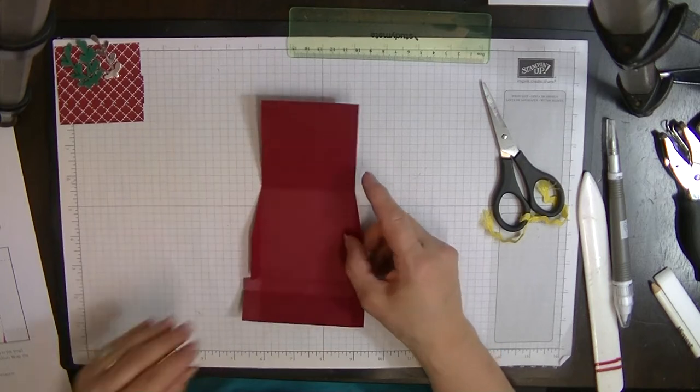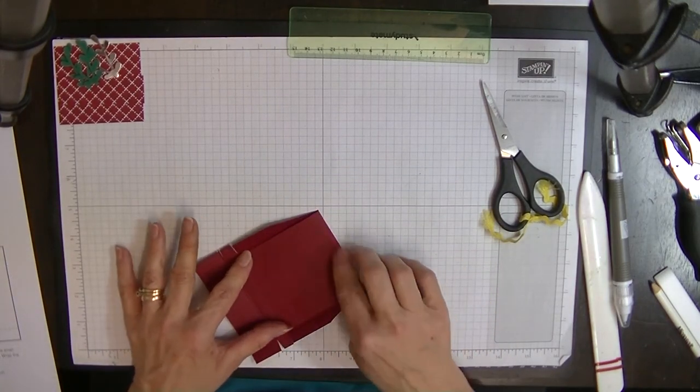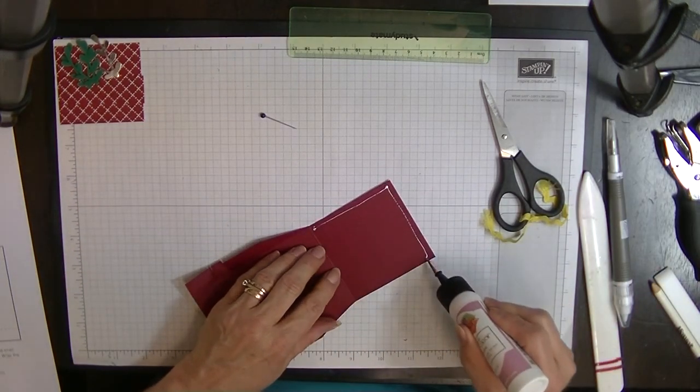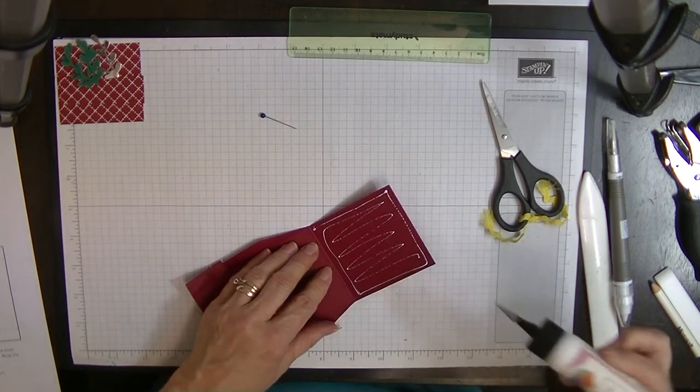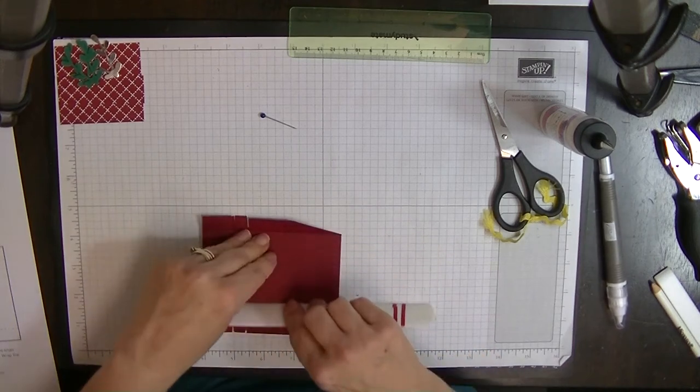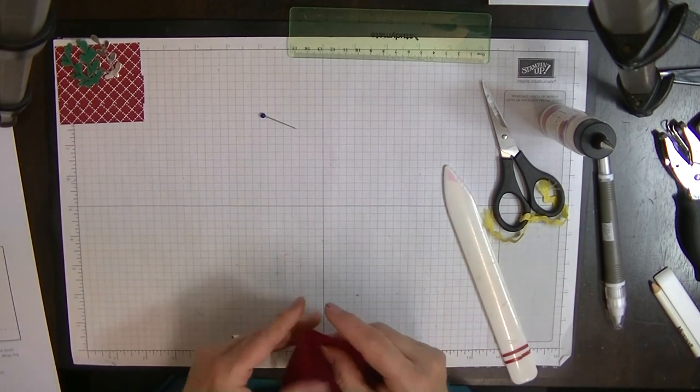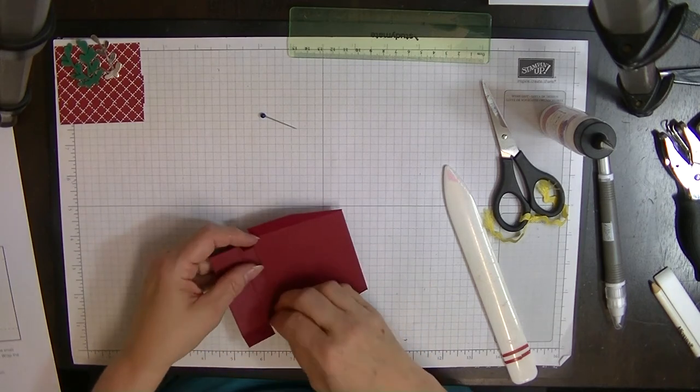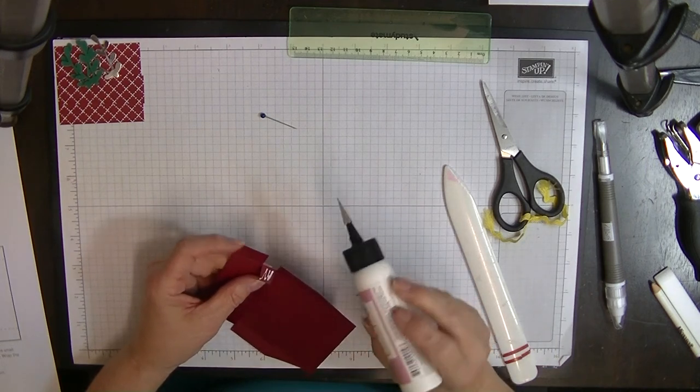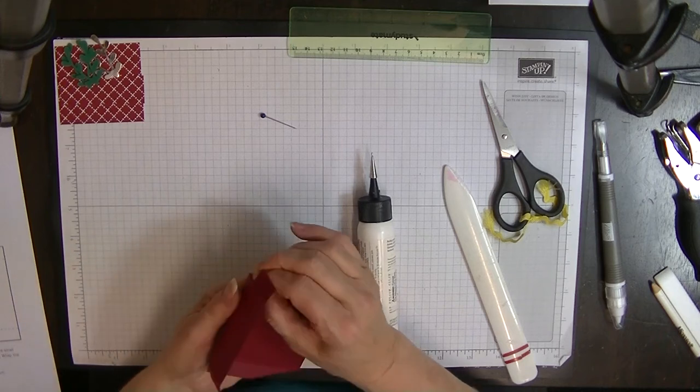Okay, so now what we need to do is we need to glue this one down flat on top of there. We're going to do that first. And then we're going to bring these flaps in at the sides, and we're going to put glue on them, and glue that side down to it.